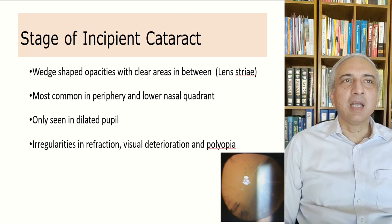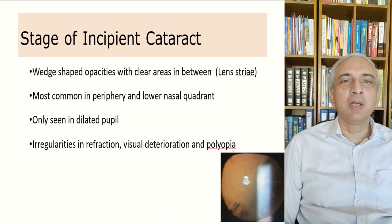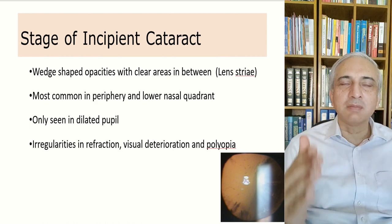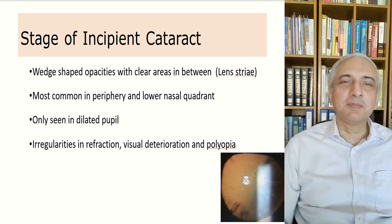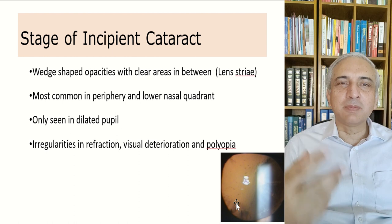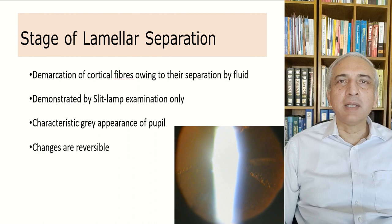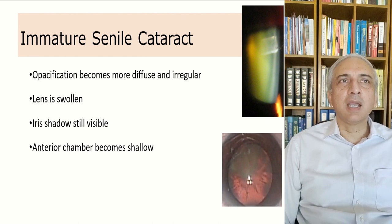In the stage of incipient cataract, you get wedge-shaped opacities with clear areas in between called lens striae. These are most common in the peripheral and lower nasal quadrant and are only seen with a dilated pupil. Because they are peripheral, they are initially insignificant for vision, but irregularities in refraction and polyopia can occur, especially at night when the pupil is dilated and light passes through the cortical wedge-shaped opacities.